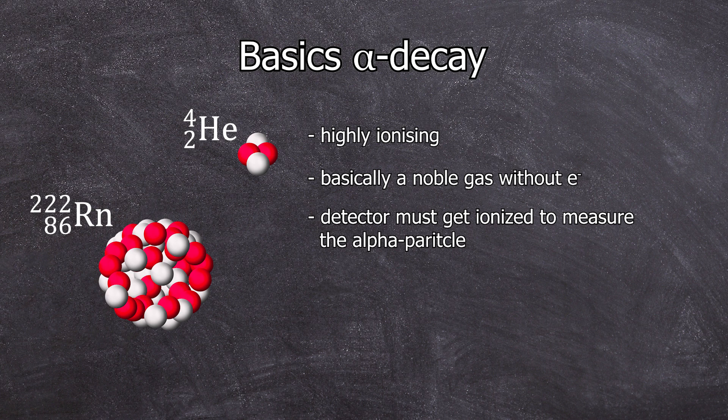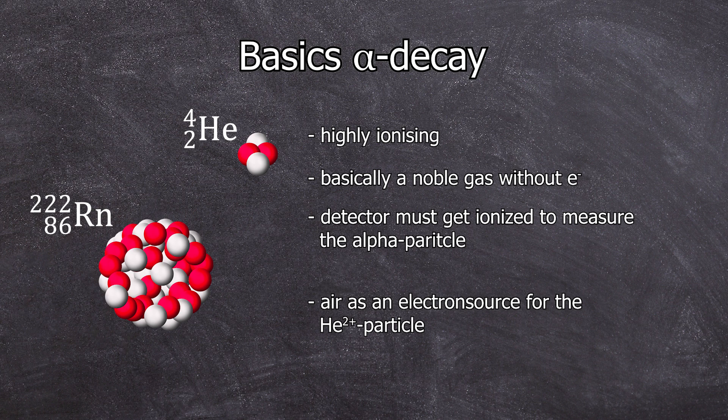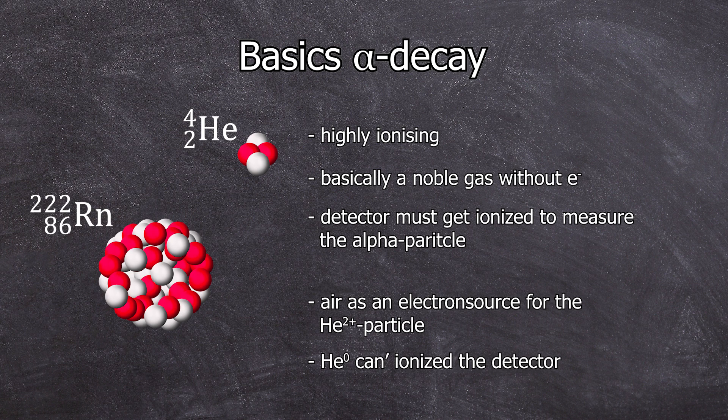However, for the alpha particle to be detected, it needs to ionize a part of the detector. If there is air between the alpha source and the detector, the air gets ionized before the detector does. As a result, the alpha particle gains two electrons during the ionization process of the air and becomes a neutral helium atom no longer capable of ionizing the detector. That's why alpha measurements are conducted in a vacuum.